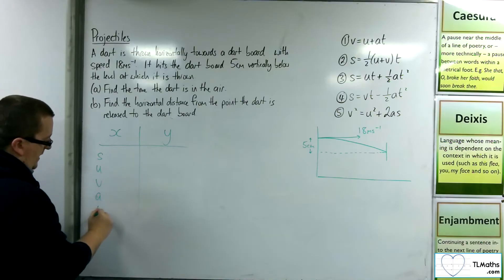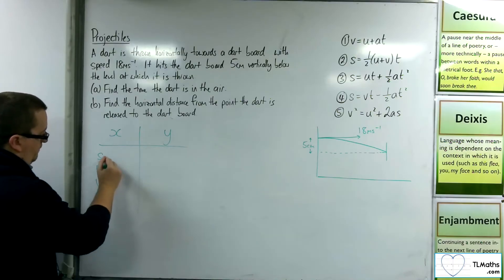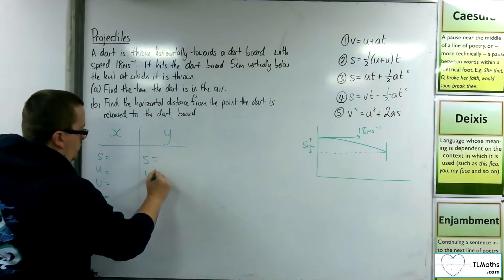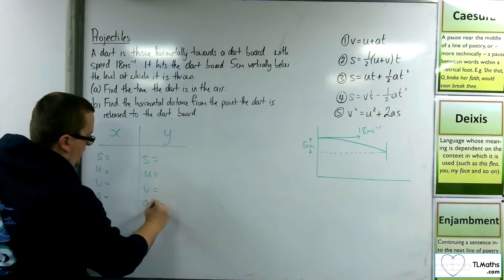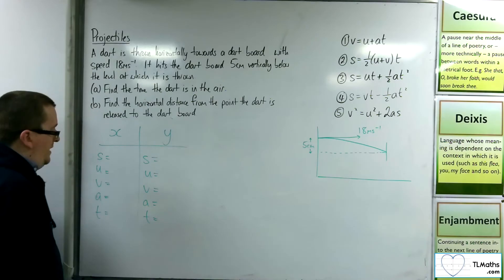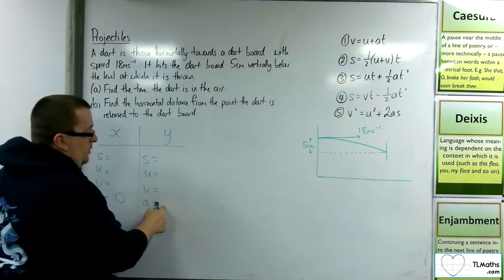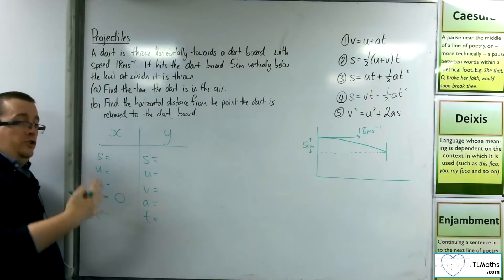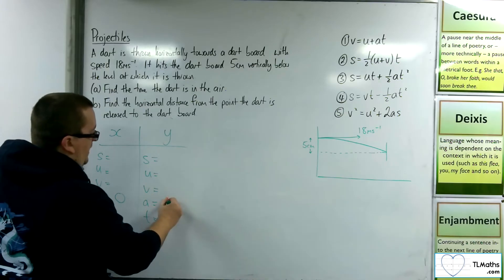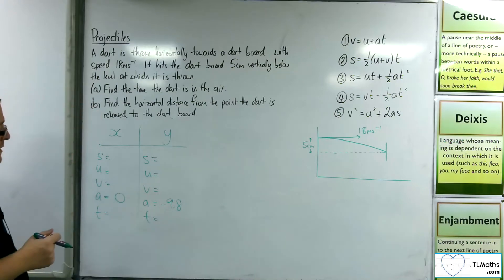So SUVAT and SUVAT. Now we know that the horizontal acceleration is 0 and we know that the vertical acceleration will be minus g. We're going to go with minus 9.8 in this question, so 9.8 meters per second per second.